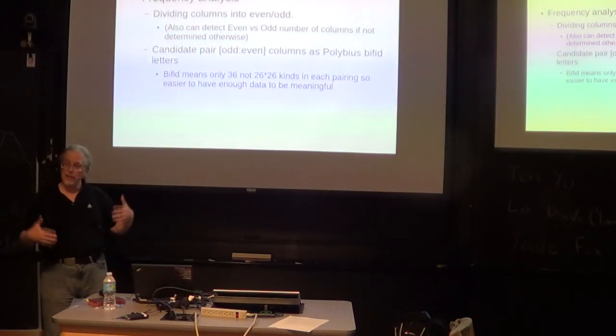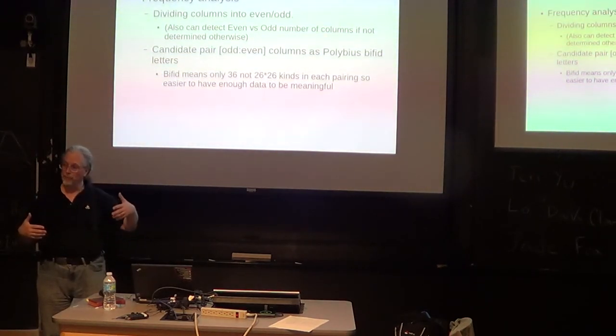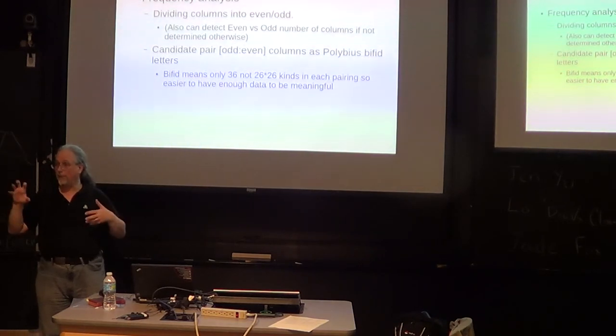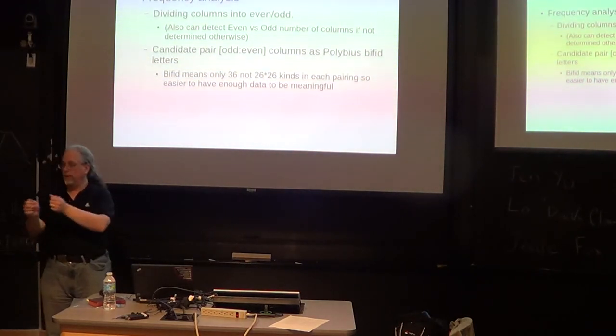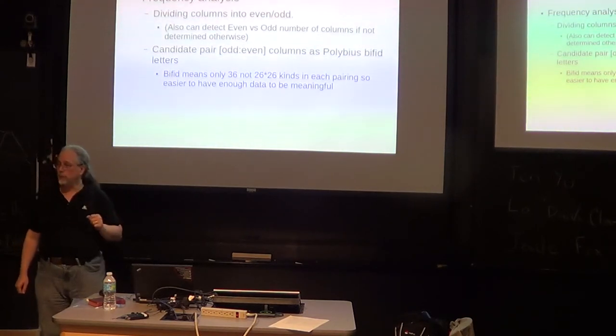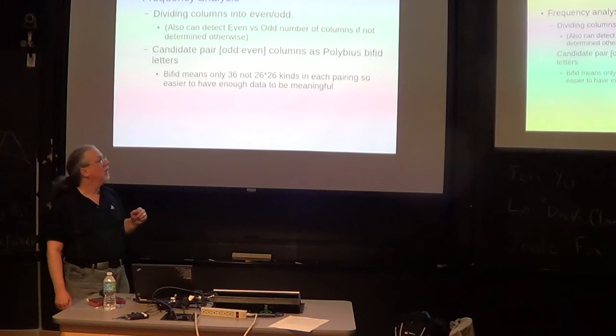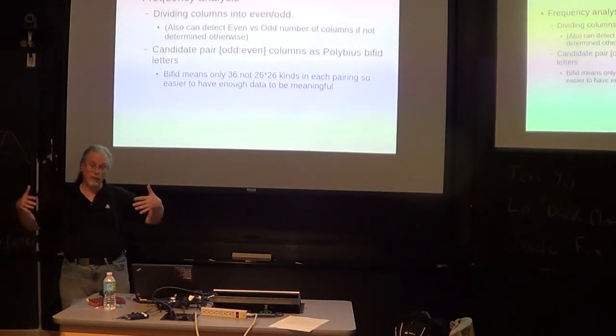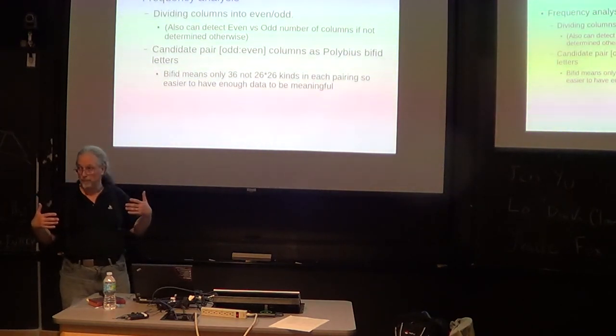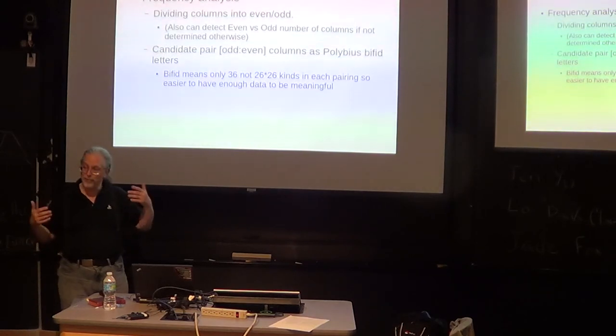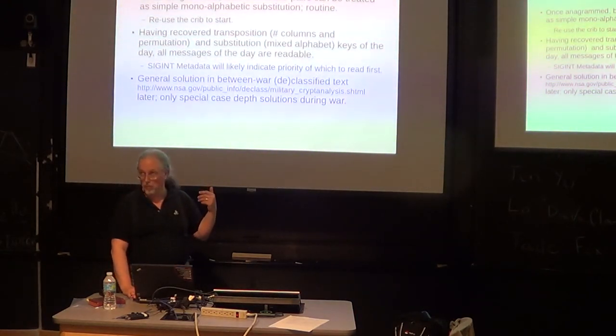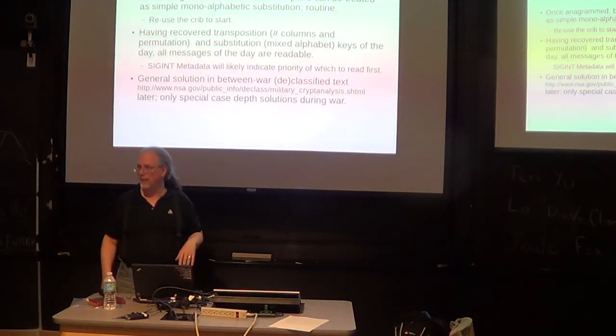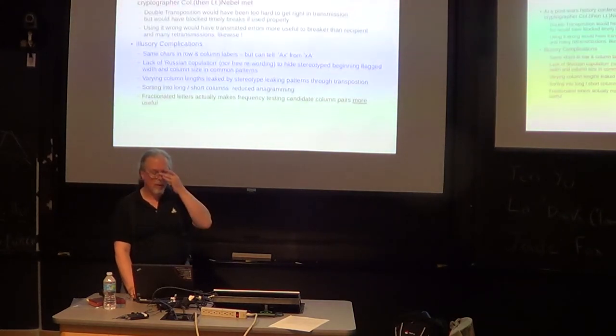The frequency analysis that you use in a substitution cipher can be used here with bifid components. The A's and X's are going to be more or less frequent on the left hand coordinate or the top coordinate depending where the hot letters are in the table. So you may be able to sort out the left columns versus the top columns once you've got it sorted into columns. That greatly reduces your anagramming search space. So the reality is that using the small number of letters such that there are only 36 combinations actually made it easier in certain ways.